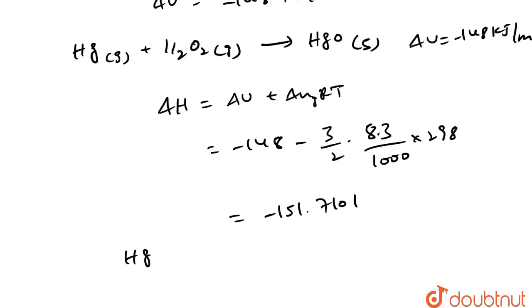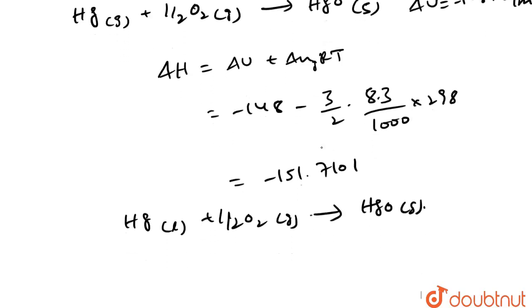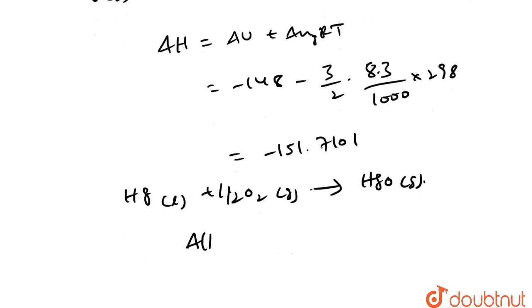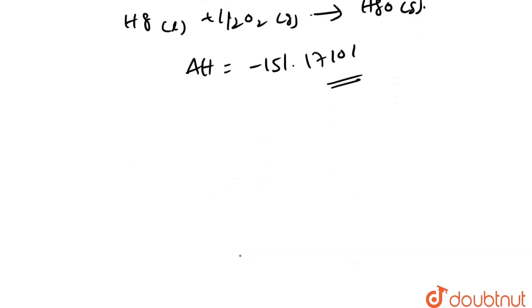If mercury equation means Hg liquid reacts with half moles of O2 gaseous molecule, then it will form HgO solid. Then delta H value becomes the heat of enthalpy formation minus 151.7101. The change in enthalpy delta H equals minus 151.7101 plus 61.32, which becomes minus 90.39.